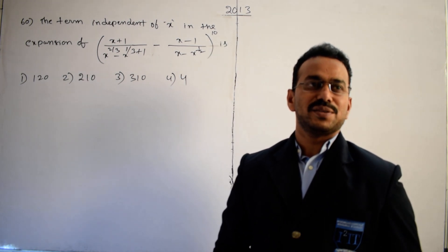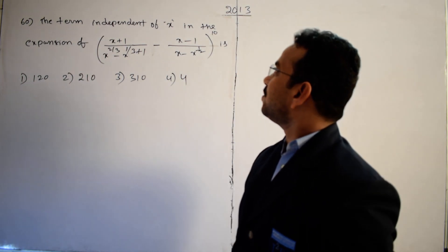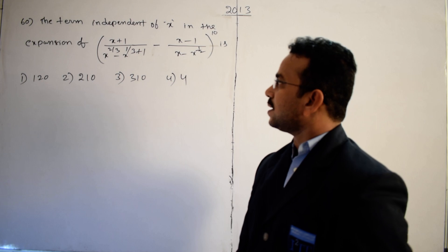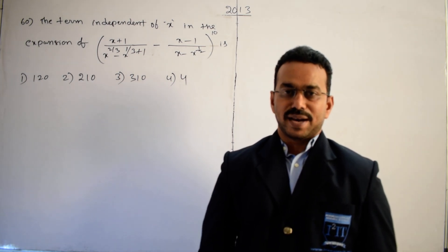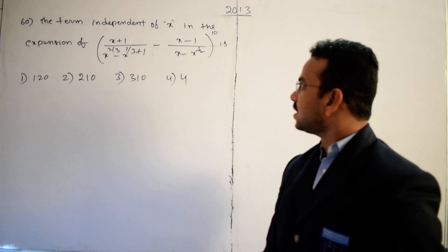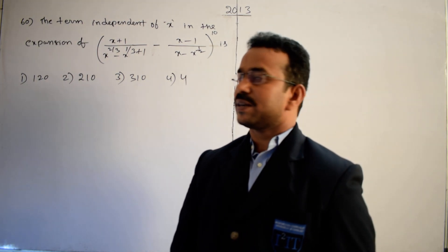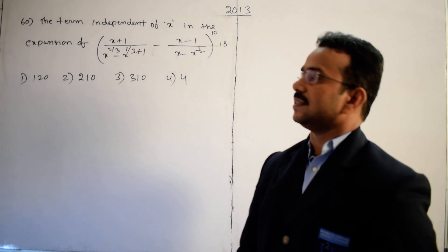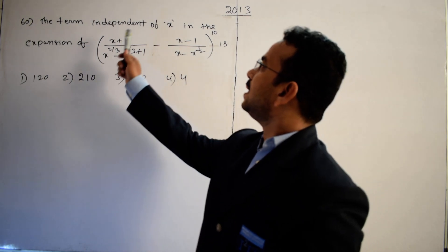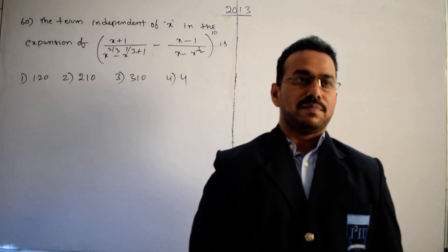Let's discuss the solution of the given question. What is the given question? The term independent of x in the expansion of (x + 1) / (x^(2/3) - x^(1/3) + 1) minus (x - 1) / (x - x^(1/2)) whole power 10. Our task is to calculate the independent term of x in the given expansion.